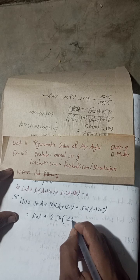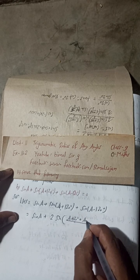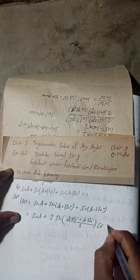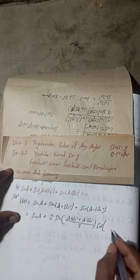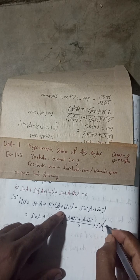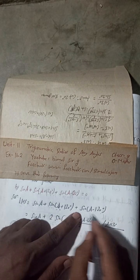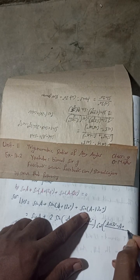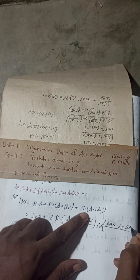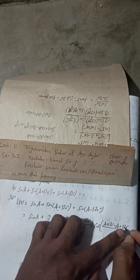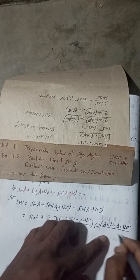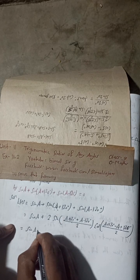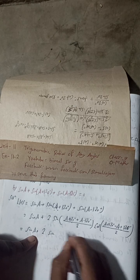So C + D means (A + 120°) + (A − 120°) divided by 2. For C − D: C is (A + 120°) and D is (A − 120°), so C − D = (A + 120°) − (A − 120°), which gives us 240° divided by 2.